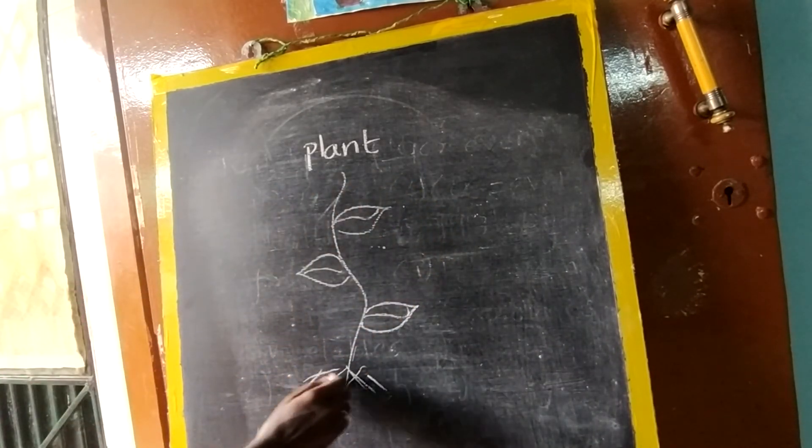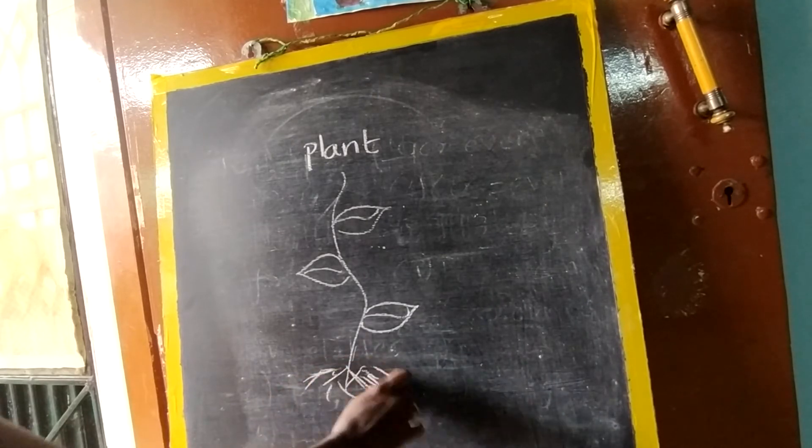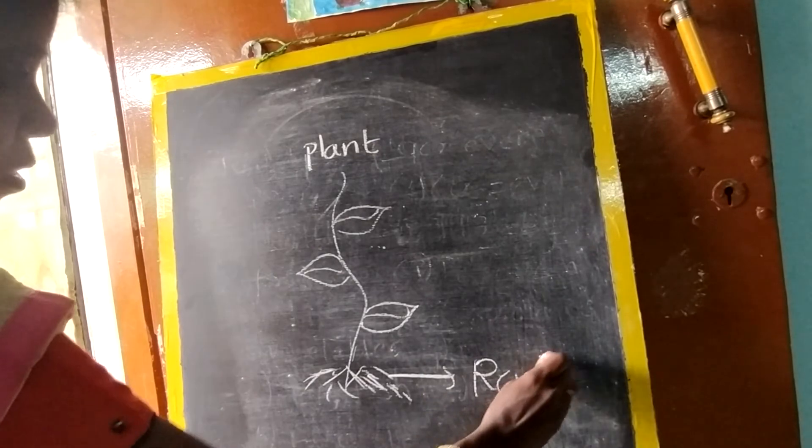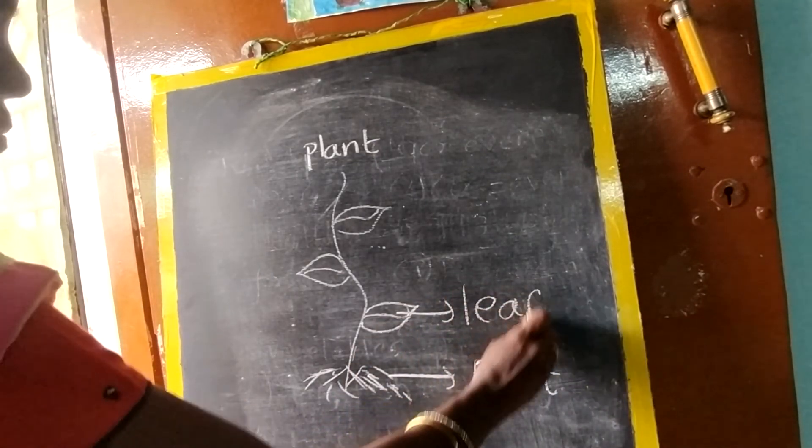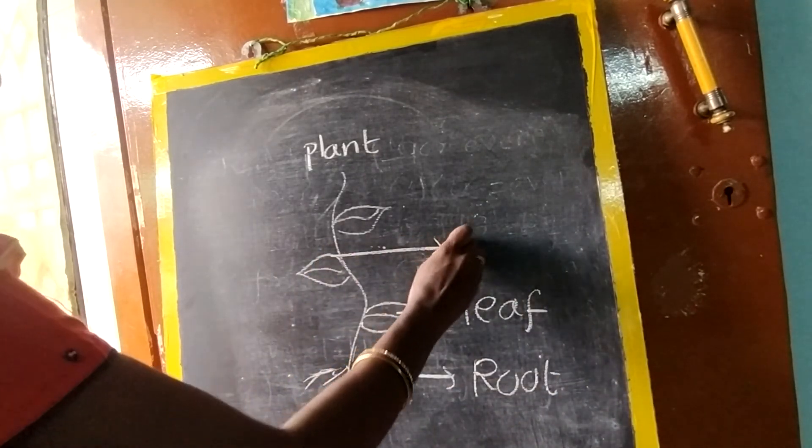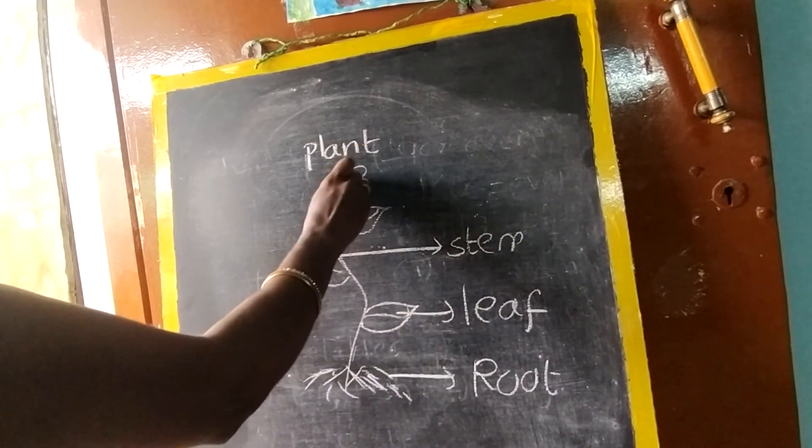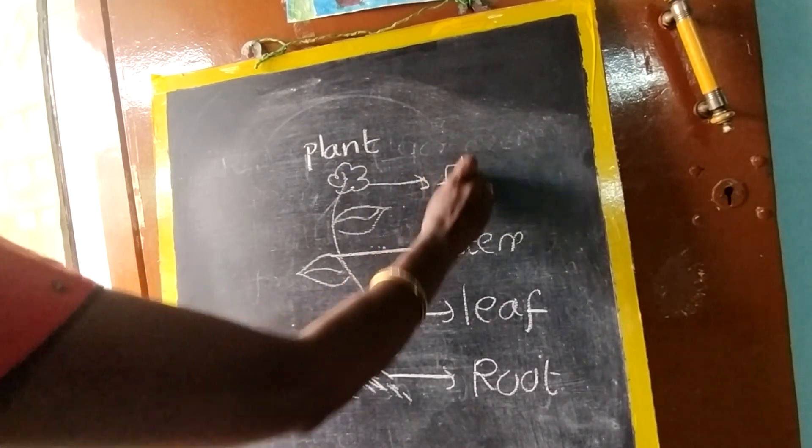The roots also same, it will be like so many branches. So this is called as root. This is called as leaf. This is called as stem. And some will have flower also. This is called as flower.